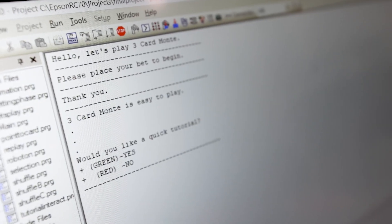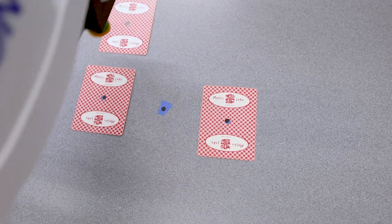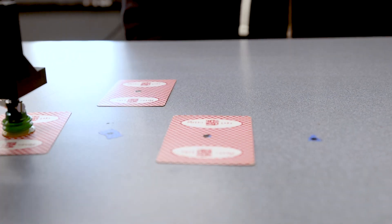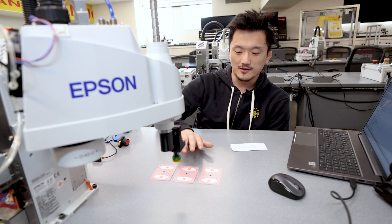I built a three-card Monte program where I have three cards. This end-of-arm tool is connected to this Epson robot and has a suction cup with a spring on there for a little bit of give, so we can touch the cards and move them around without damaging anything.